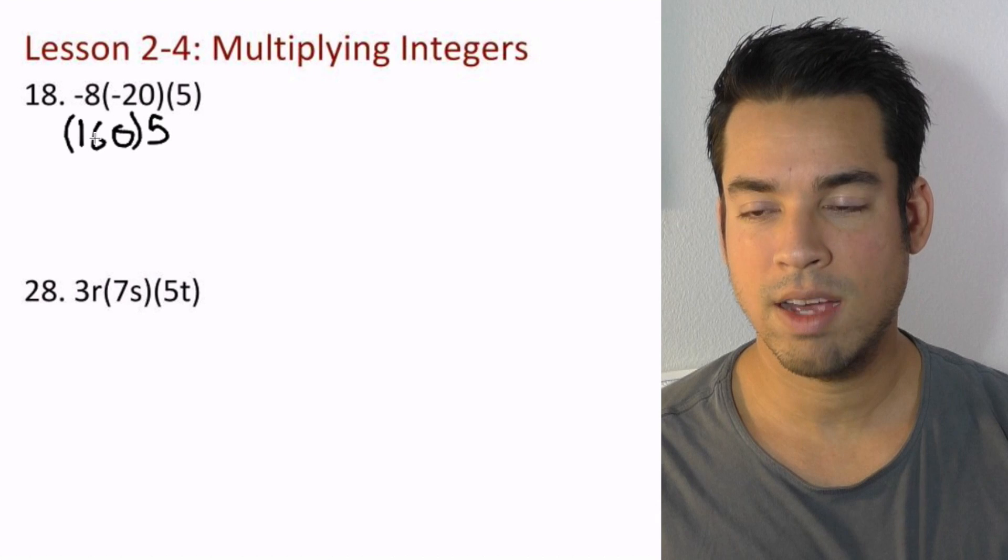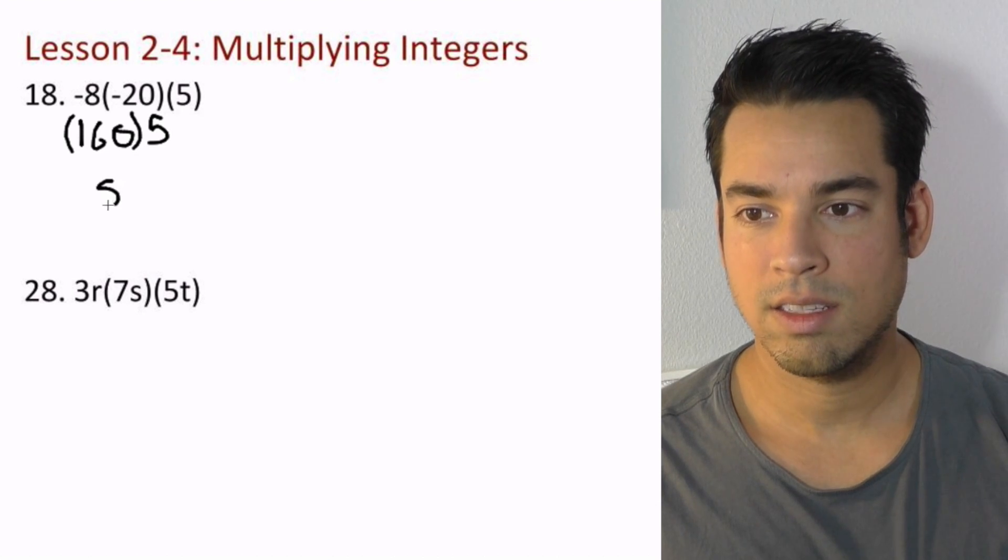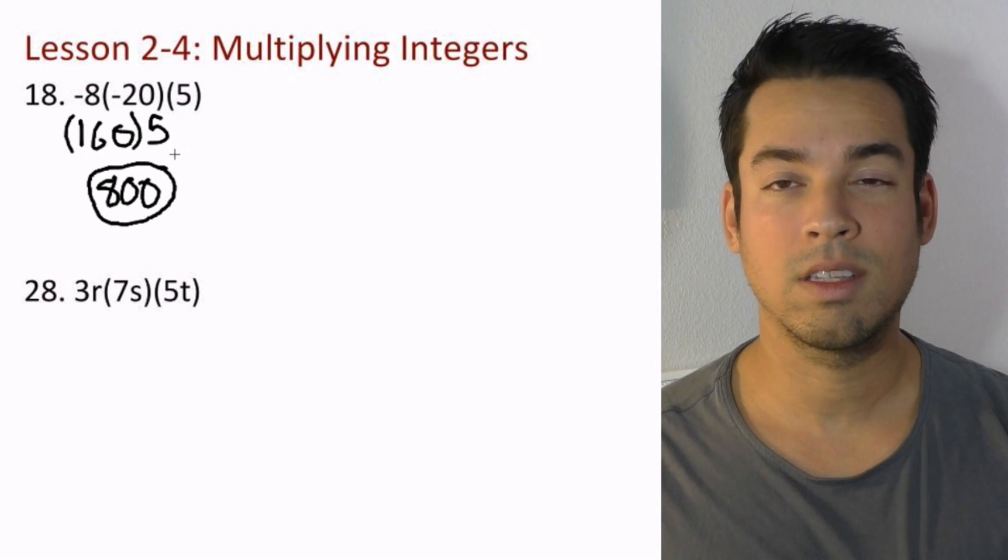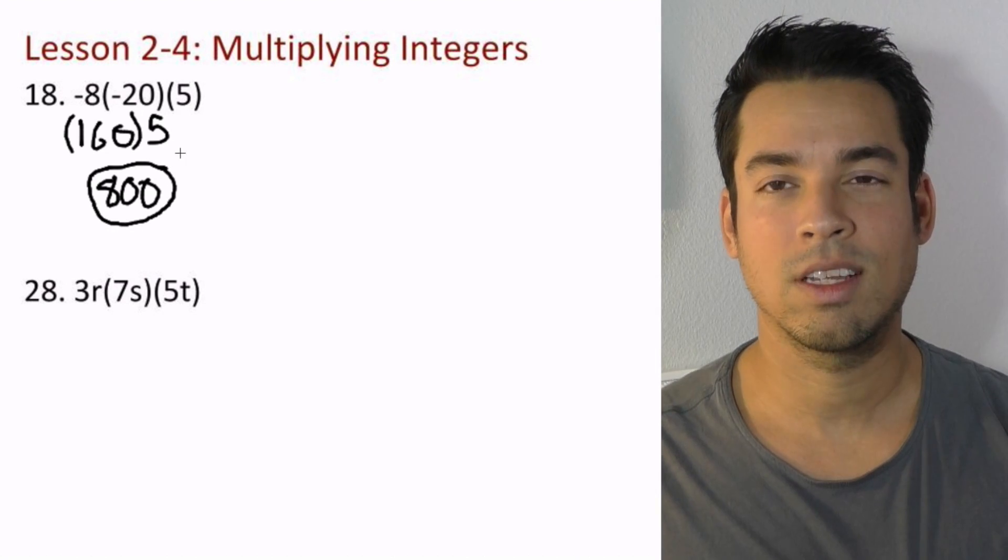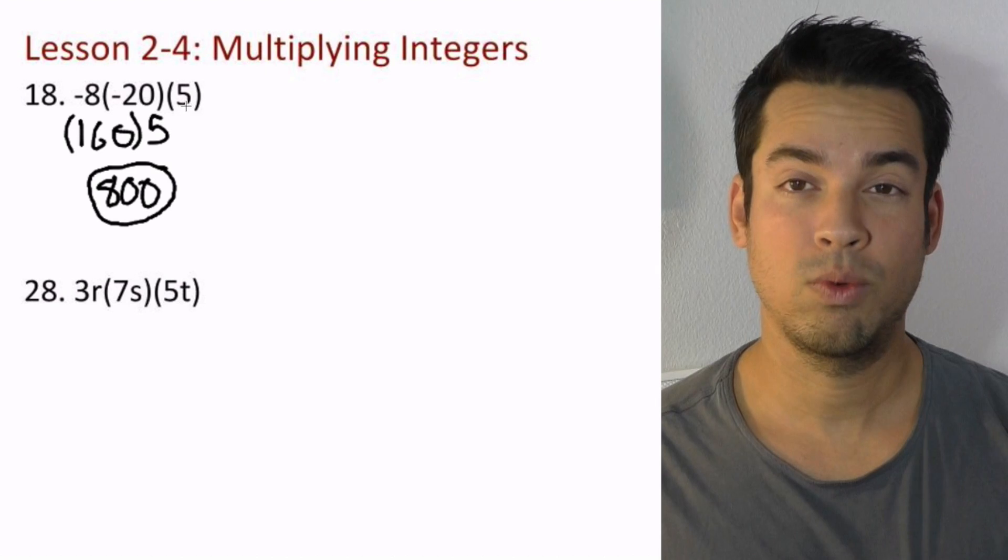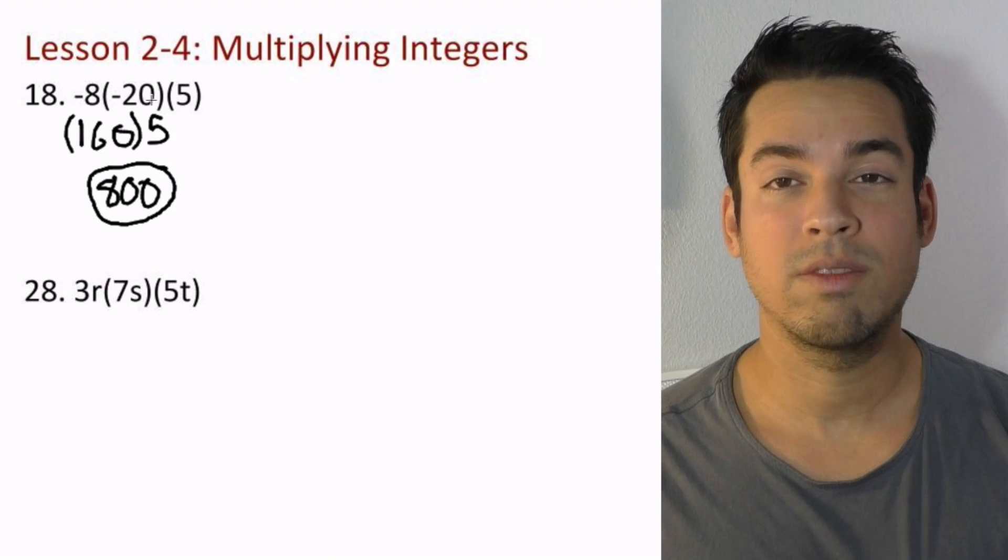What's 5 times 160? That is 800. Now you could have done this in another order as well, because the commutative property of multiplication says if we're just multiplying a bunch of integers, we can do it any way we want. It could be easier to do 5 times 20 first, which is 100, then times 8, which is 800.